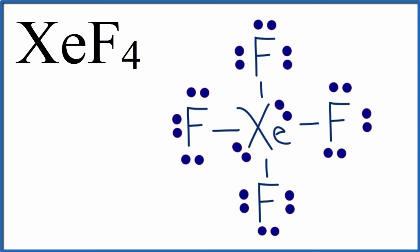So this is the Lewis structure for xenon tetrafluoride, XeF4. You can see that we have single bonds to each of the fluorine atoms. So we have our four fluorine atoms. They're bonded, they're sharing a pair of electrons with the xenon.